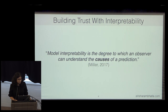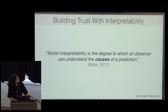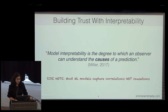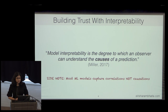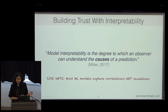So how do we build trust with interpretability? Model interpretability is the degree to which an observer can understand the causes of a prediction. This is somewhat misleading, because most machine learning models capture correlations and not causations. We should be talking about what the model thinks are the causes, since it's only observing a set of features to make decisions on — not the full picture. Garbage in, garbage out.